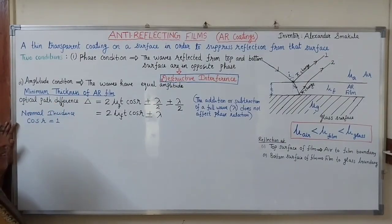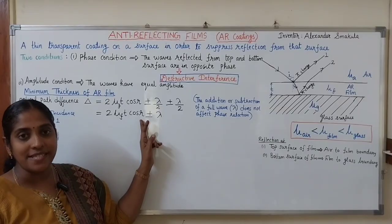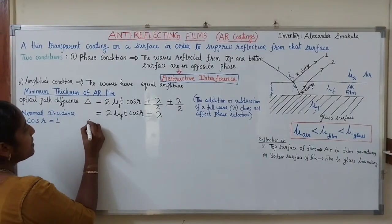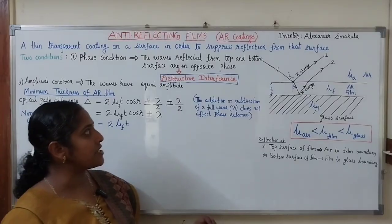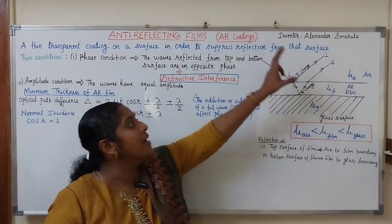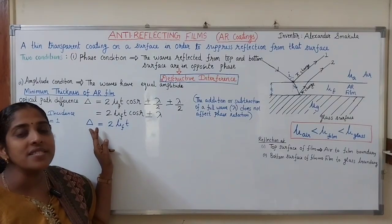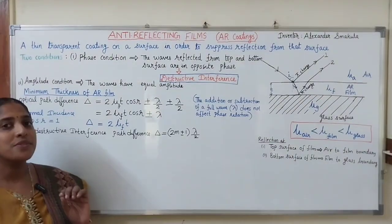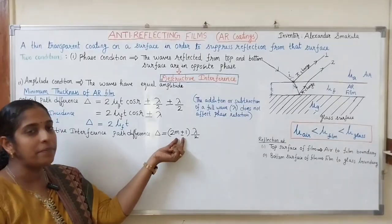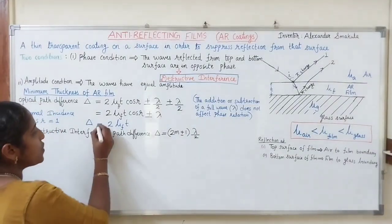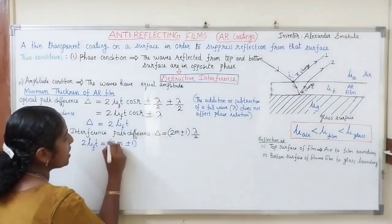For normal incidence of light, the angle of refraction R = 0, so cos R = 1. The final path difference becomes Δ = 2μT. To minimize reflection — that is, to produce destructive interference — this path difference must be an odd multiple of λ/2. So for destructive interference: Δ = 2μT = (2m ± 1) × λ/2, where m is an integer.